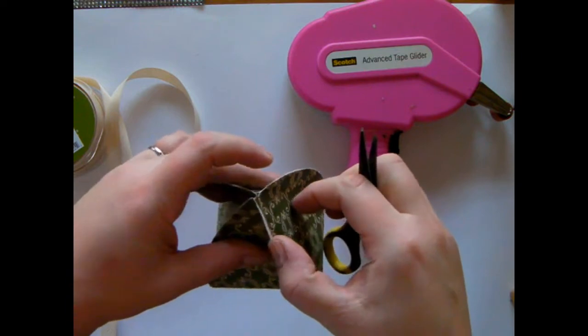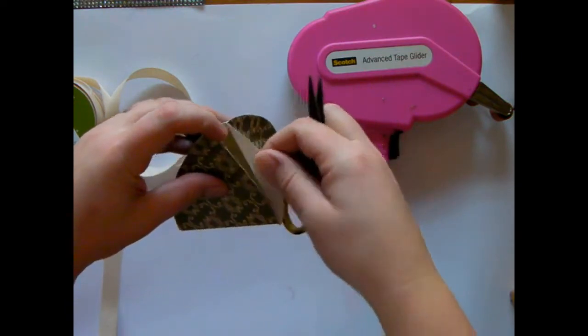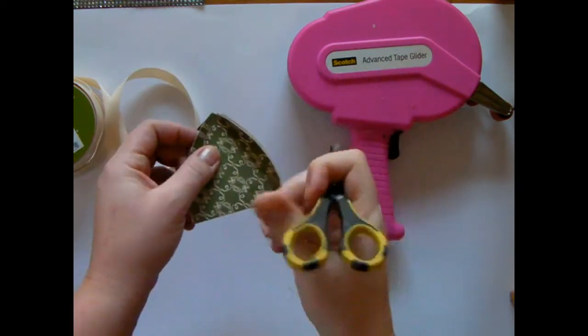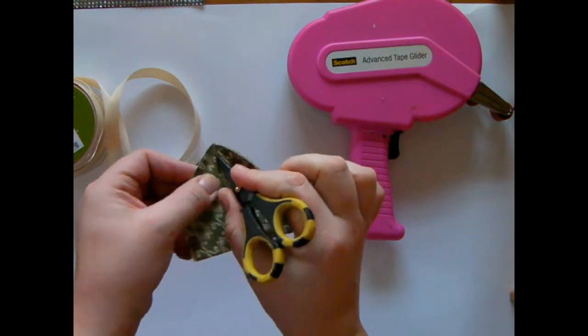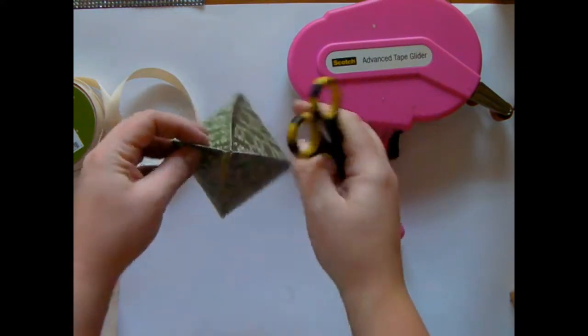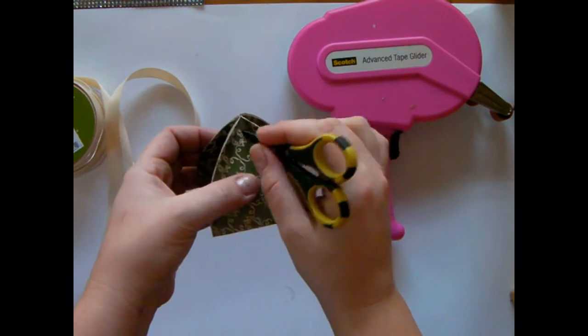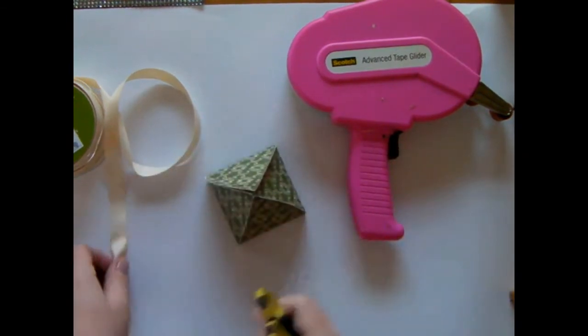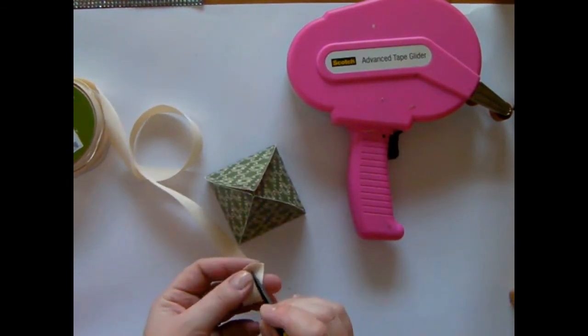Last but not least, we're going to add some ribbon. I'm just going to take my scissors—there's a little hole that's punched here at the top—so I'm just going to poke that hole in, and then I'm going to go on the opposite side and punch that one in as well.